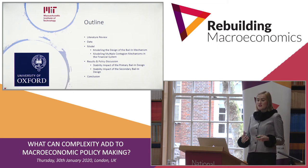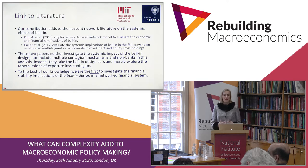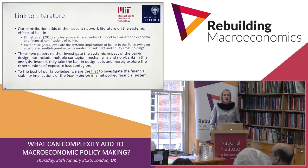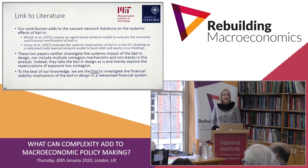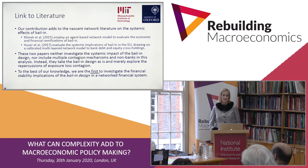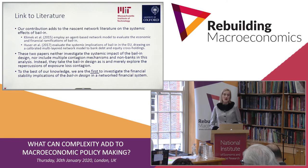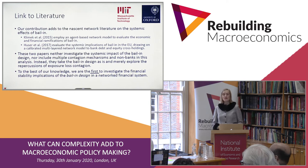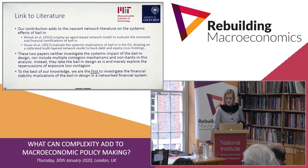Klimek and Husser have looked at whether bail-in can be done without undermining financial stability. But what these papers have in common is that they neither include multiple contagion mechanisms nor non-banks, and they take the bail-in design as given without allowing for different bail-in designs. They only focus on exposure loss contagion in the banking system with one bail-in design. We are, as far as we are aware, the first to investigate the financial stability consequences of the bail-in design in a networked financial system.